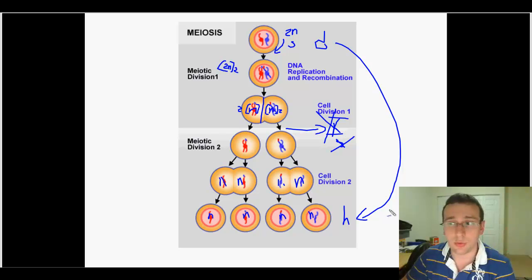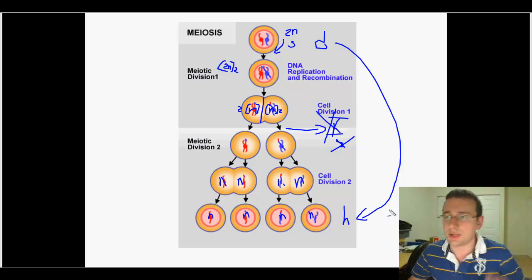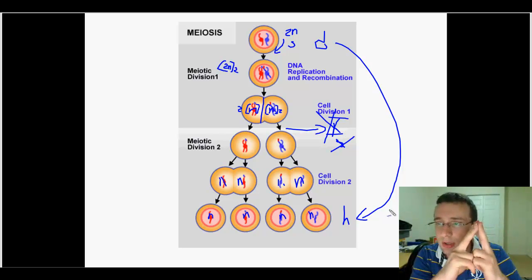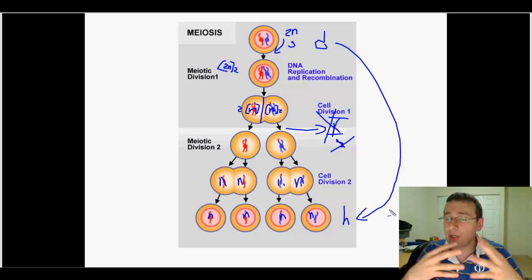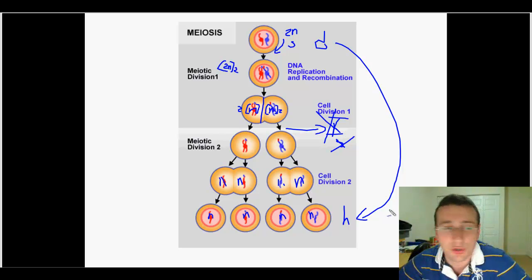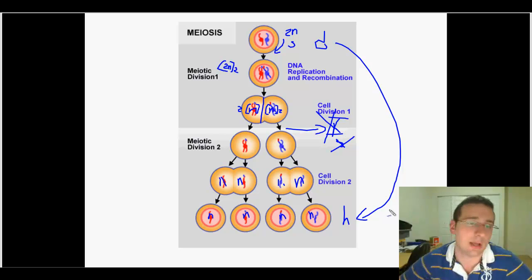And remember that you want this to happen because if it doesn't happen, your gametes will be 2N. And if your gametes are 2N and you get a 2N gamete and you combine it with another 2N gamete, you make a 4N cell. So that would mean that every generation, the DNA would double. And eventually, you would have too much DNA in the cell and cause too many problems.